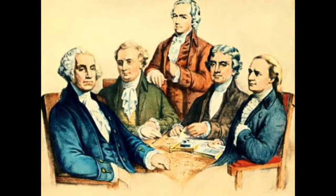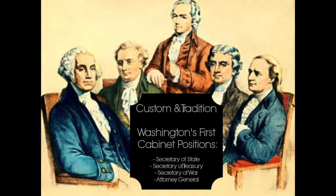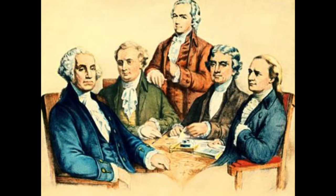The cabinet is the product of custom and usage — it's not mentioned in the Constitution. However, at its first session in 1789, Congress established four top-level executive posts: Secretary of State, Secretary of the Treasury, Secretary of War, and Attorney General. President George Washington regularly sought the advice of the four outstanding people he named to those offices, including Jefferson, Hamilton, Henry Knox, and Edmund Randolph.